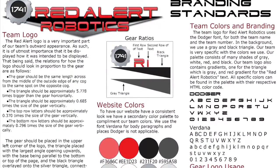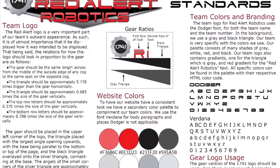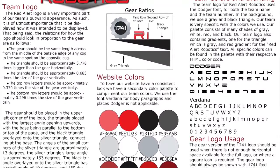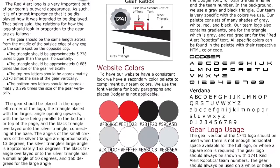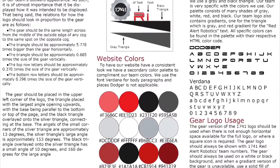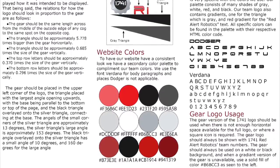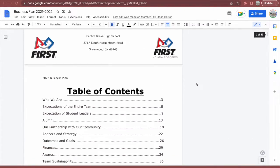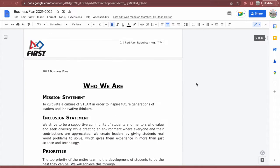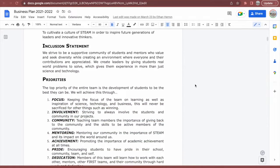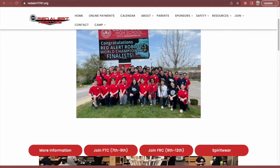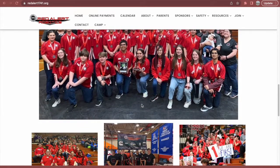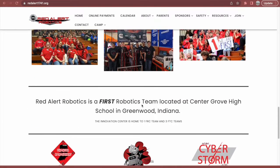These are our team's branding standards. They help us establish a consistent font, color palette, and dimensions for our logo. This gives our team a formal appearance and keeps an overall consistency with everything. These branding standards are important when creating formal documents such as business plans, risk analysis, and statistics packets. They're also important to make sure that your website has a formal look along with the other logos and flyers that your team creates.